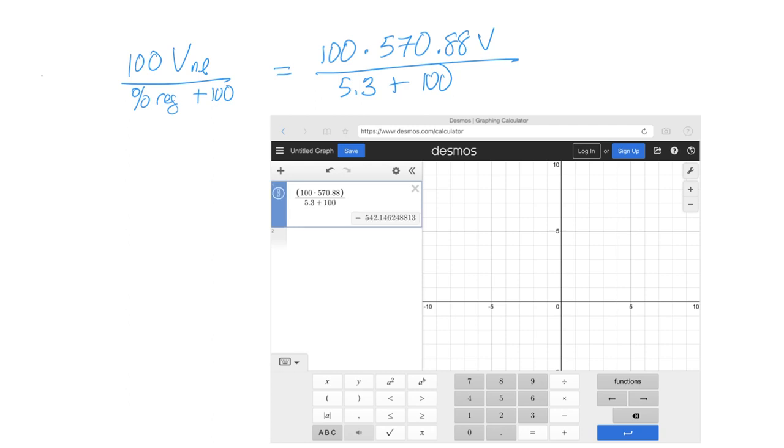And lots of students mess up that thing there, that they just try and put divide 5.3, and then they add 100 to the whole thing, whereas Desmos really shows you how I'm doing it on paper.